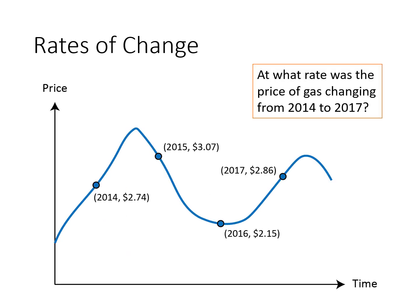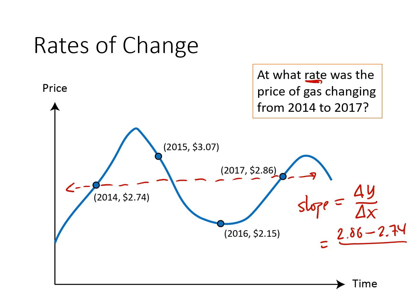Once we have some data points, we might be able to answer questions like: at what rate was the price of gas changing from 2014 to 2017? Essentially what we're looking for is drawing a line — I'll draw it as a dashed line — between these two data points. When we talk about the rate of change, what we're really looking at is the slope. The slope is the change in y divided by the change in x, vertical change divided by horizontal change. The y values are $2.86 and $2.74, and the x values are the years: 2017 minus 2014. The top of my fraction is 0.12, the bottom is 3, so I get $0.04 per year.